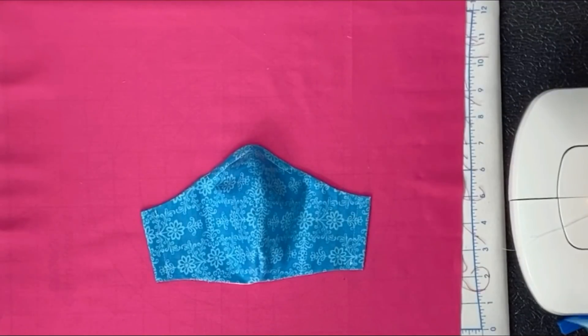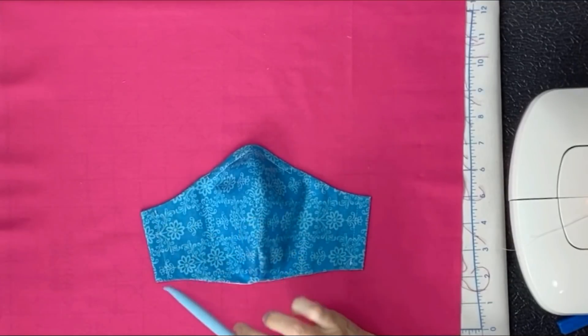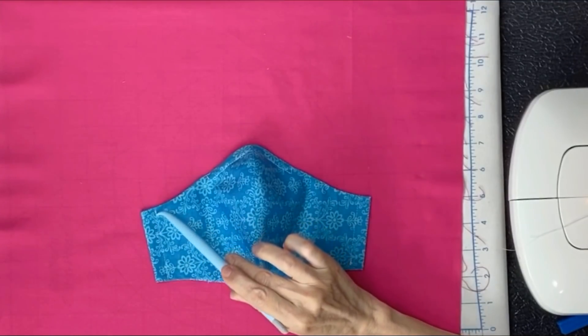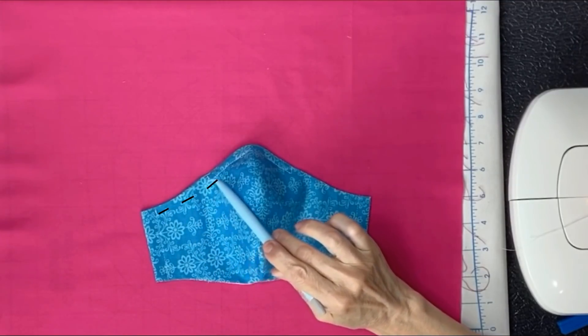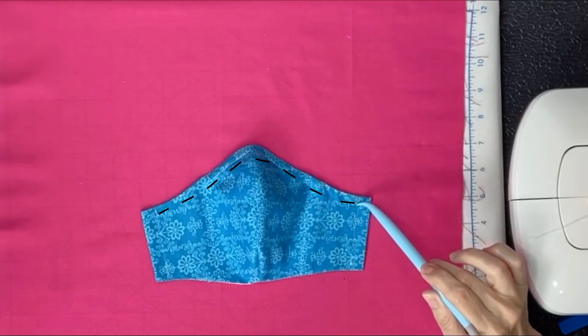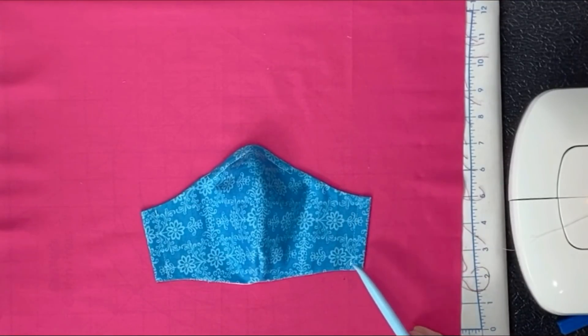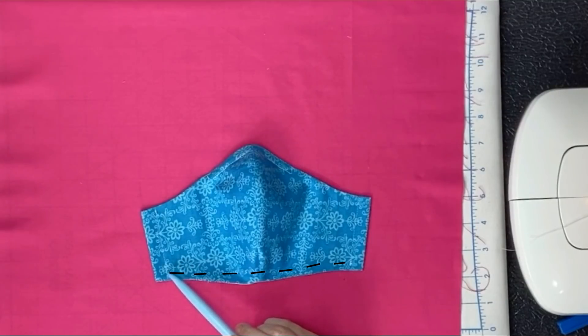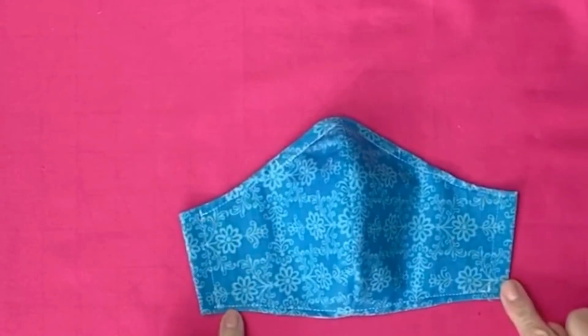Now we'll do a top stitch. And we want to start it right here. Do not go in this area. This is where our elastic will go. So we'll start right here. Go a quarter inch from the edge. Go up. Down. And stop when you get to the stitches. Right here. And we'll do the bottom. Same thing. Start right where your stitches are. Come across. And end where the stitches are. Alright, we're just about done. Got the top stitch done. Now all we need to do is put our elastic in.